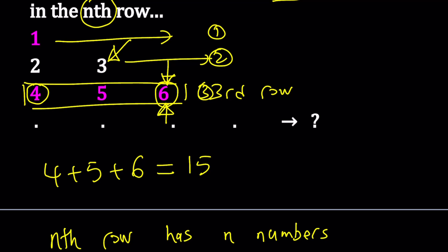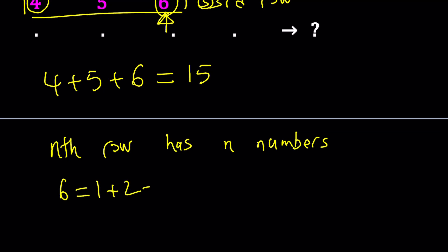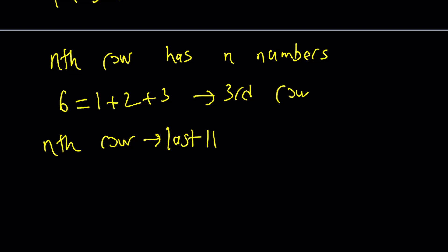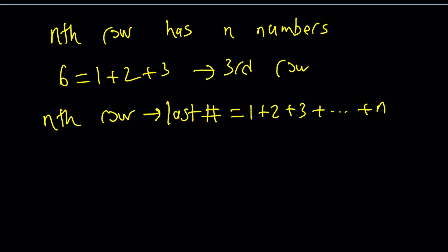The last number in the third row is 6 because 6 equals 1 plus 2 plus 3. You get the last number by adding all numbers 1 through n. So for the nth row, the last number L equals 1 + 2 + 3 + ... + n, which is n times (n+1) divided by 2.